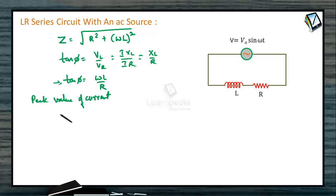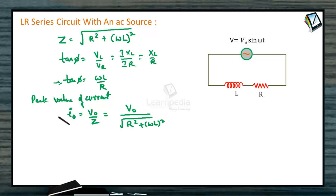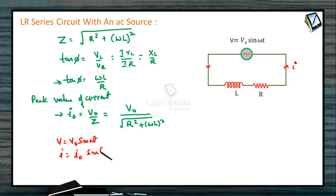We can calculate the peak value of current: I₀ = V₀/Z = V₀/√(R² + (ωL)²). The total potential supplied is V = V₀ sin(ωt), and the current flowing in the circuit is I = I₀ sin(ωt − φ), because the current lags behind the voltage. The phase angle φ = tan⁻¹(ωL/R) and I₀ = V₀/Z.